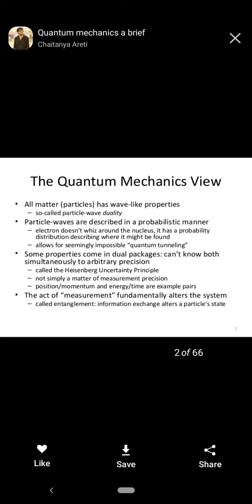Particle waves are described in a probabilistic manner. In quantum mechanics we cannot exactly specify the position of a particle or wave. We can only define the probability of finding the particle waves in a region. So electrons don't always go around the nucleus; they have a probability distribution describing where they might be found. And this allows for seemingly impossible quantum tunneling effects, which you will study later in upcoming sessions.